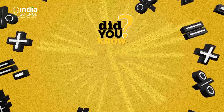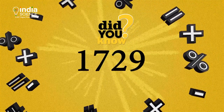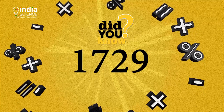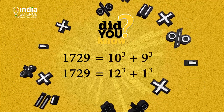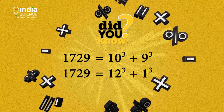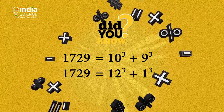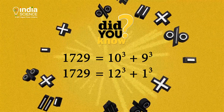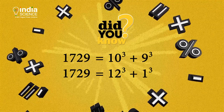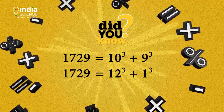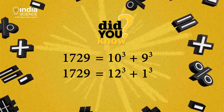Did you know 1729 is a magic number in mathematics? Discovered by Indian mathematician Srinivas Ramanujan. It is a magic number because it is the sole number which can be expressed as a sum of the cubes of two different sets of numbers: 10³ + 9³ = 1729, and 12³ + 1³ = 1729.